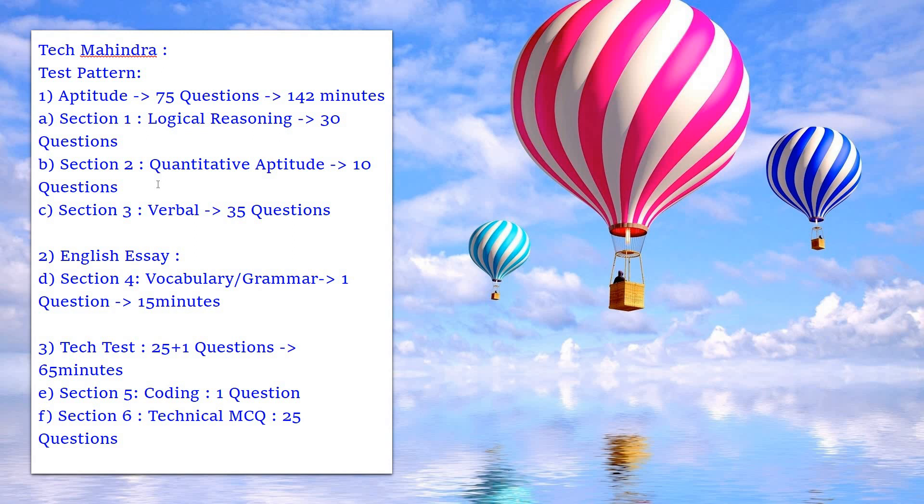Section 2 is quantitative aptitude with 10 questions. Similarly, Section 3 is the verbal part, or English, with 35 questions.